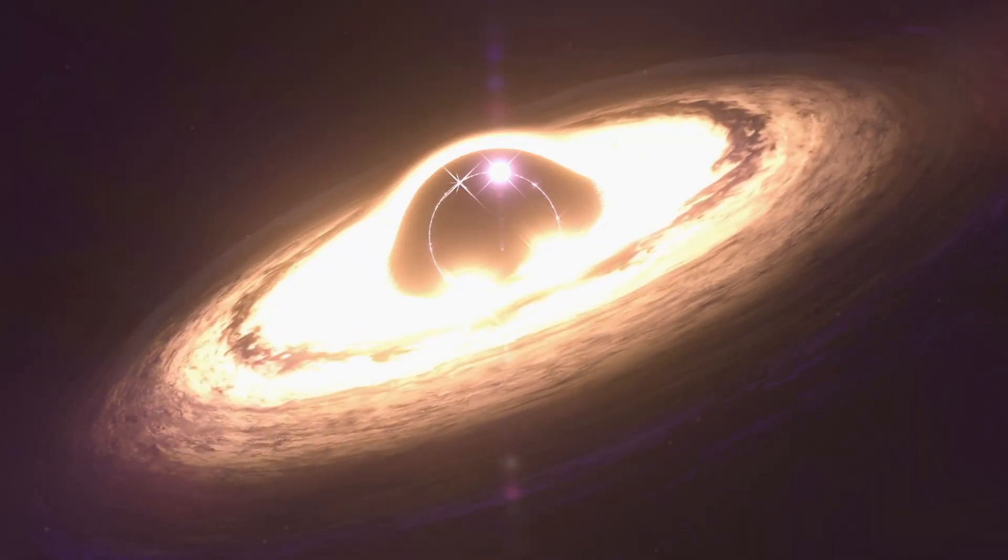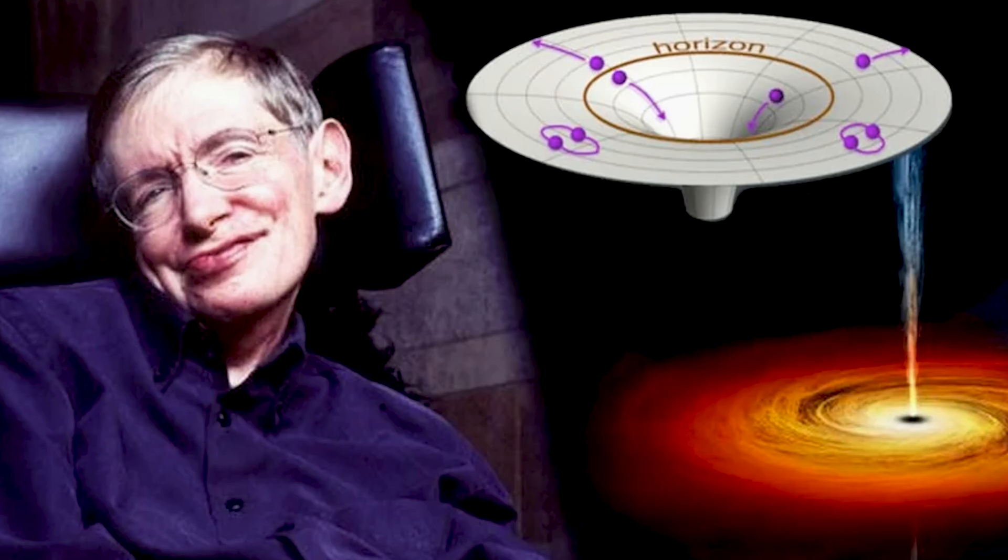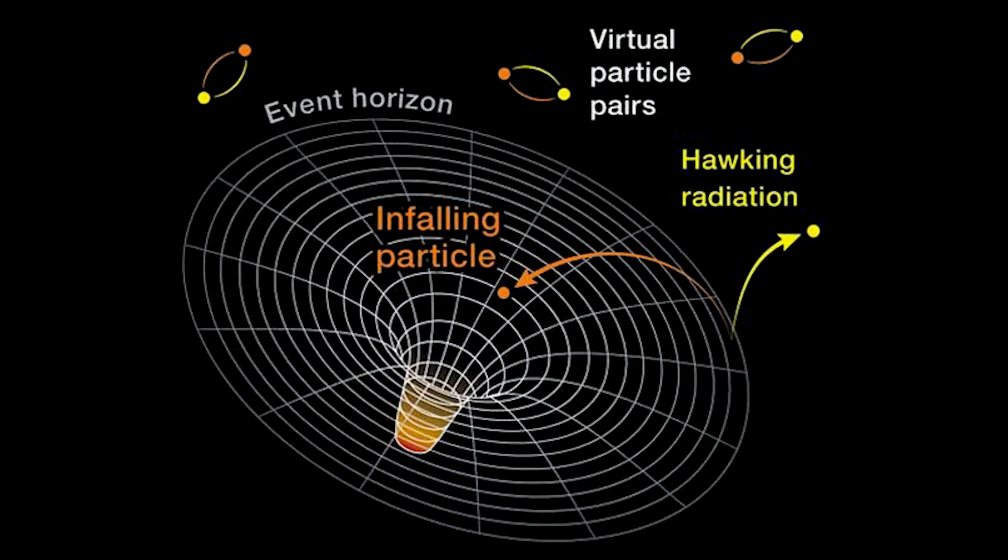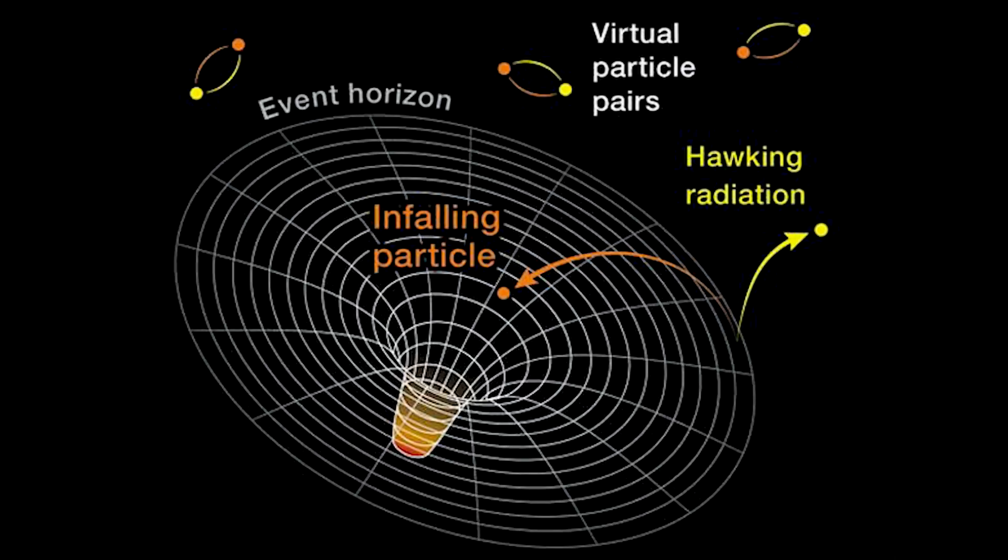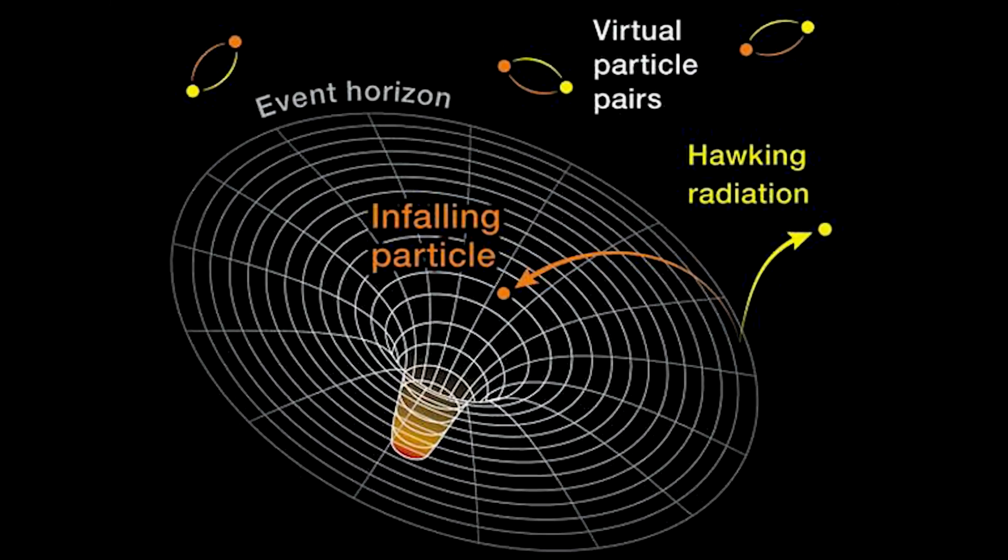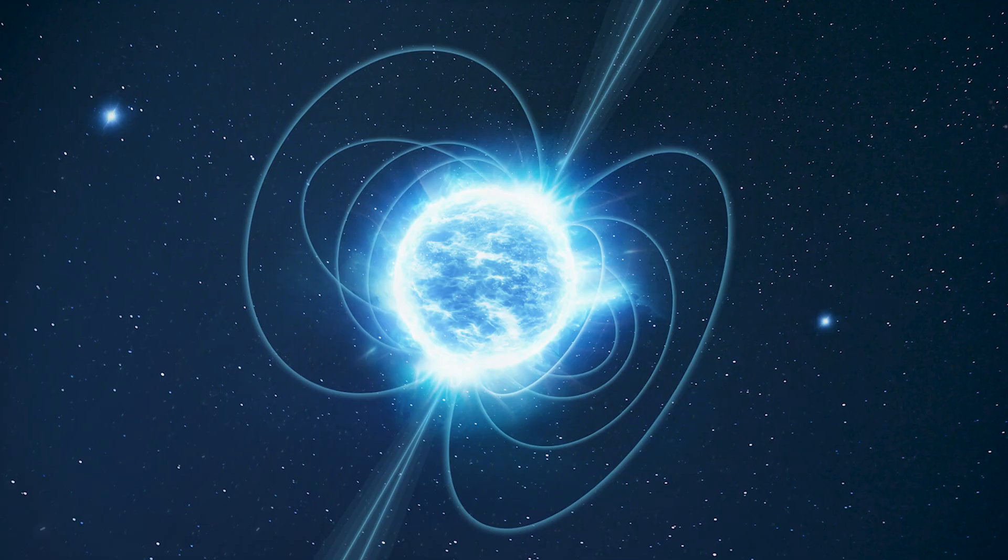Black holes were the only exception. Stephen Hawking showed that quantum effects near an event horizon cause black holes to slowly evaporate, emitting faint radiation over unimaginable lengths of time. But white dwarfs and neutron stars? They were thought to last forever.